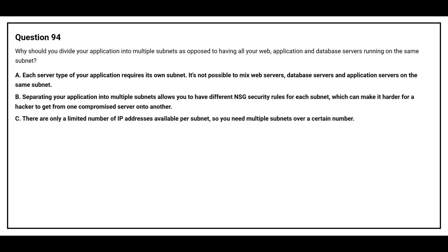Question number 94: Why should you divide your application into multiple subnets as opposed to having your web applications and database servers running on the same subnet? Option A: Each server type of your application requires its own subnet — it's not possible to mix web servers, database servers, and application servers on the same subnet. Option B: Separating your application into multiple subnets allows you to have different NSG security rules for each subnet, which can make it harder for a hacker to get from one compromised server onto another. Option C: There are only a limited number of IP addresses available per subnet, so you need multiple subnets over a certain number.